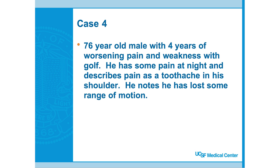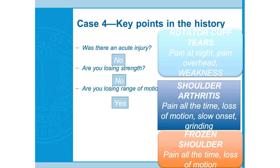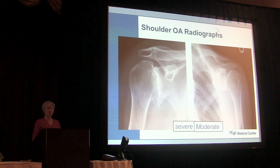Case four: 76-year-old male with four years of worsening pain and weakness with golf. He has some pain at night and describes it as a toothache in his shoulder. He has lost some range of motion. Running the algorithm: no acute injury, slow onset, not losing strength significantly, but losing motion — and he has grinding. By exclusion — we've already covered frozen shoulder and rotator cuff tear — this is shoulder osteoarthritis.